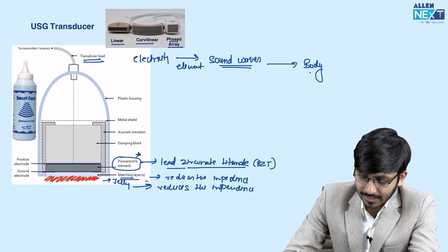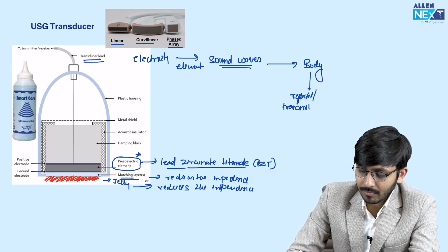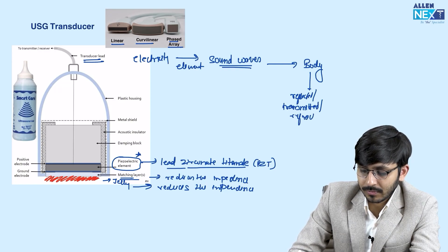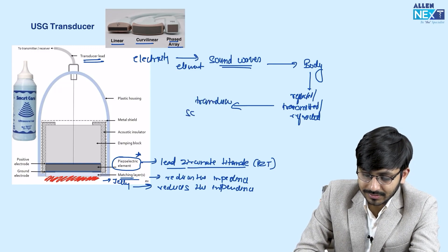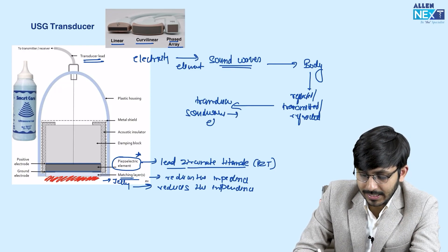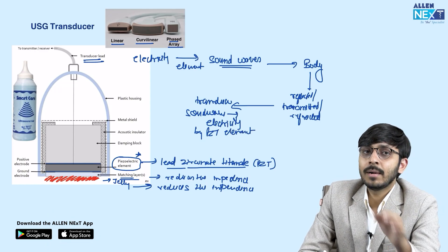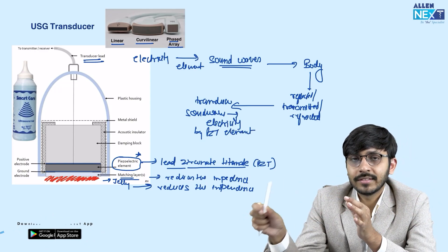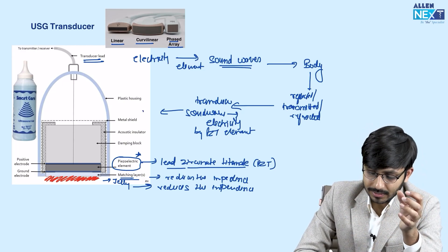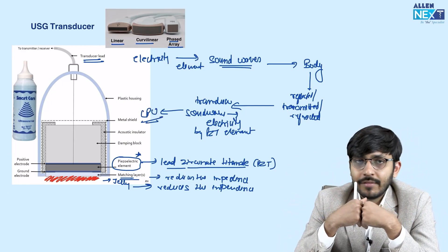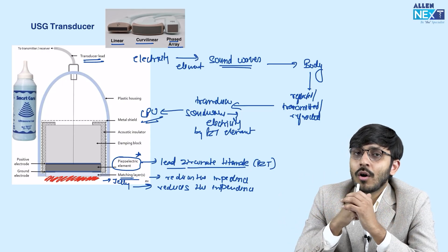Within the body, sound waves travel and are either reflected, transmitted, or refracted. These are again picked up by the same transducer, which converts the sound waves back into electricity via the piezoelectric element. This element works both ways — converting electricity into sound waves and sound waves back into electricity. These electrical signals are then processed by the CPU and converted into the relevant images we see on the screen. This is how the ultrasound transducer is the backbone of the ultrasound machine.